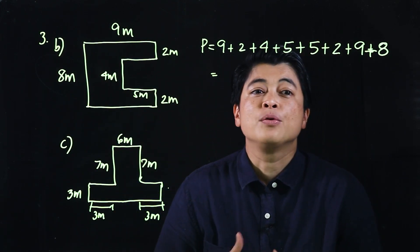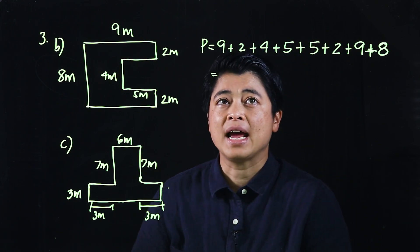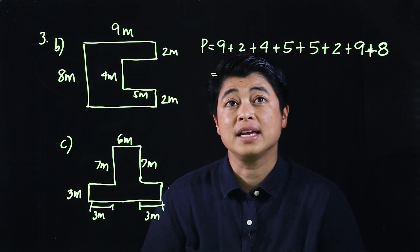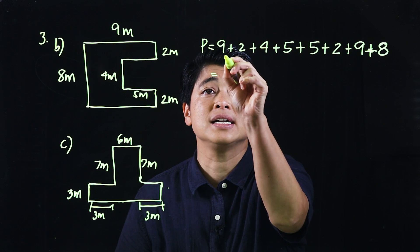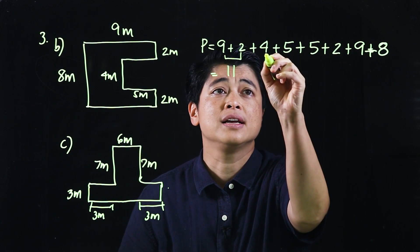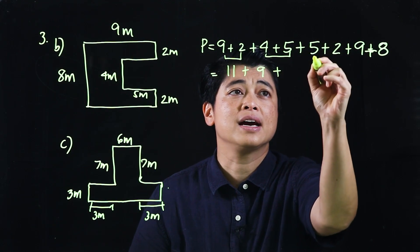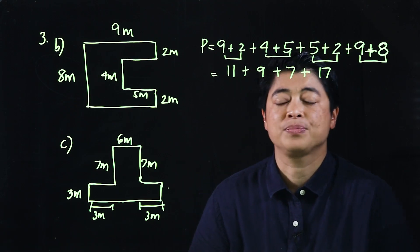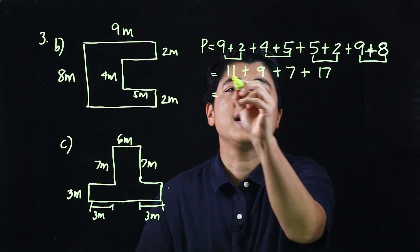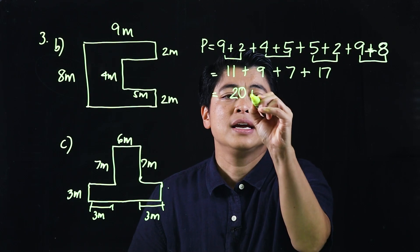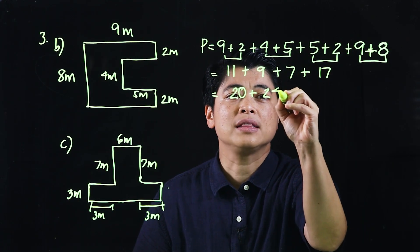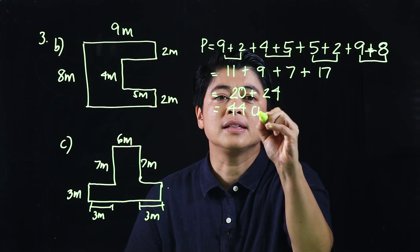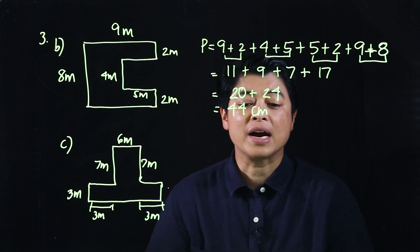We can add the sides one by one or in groups, whatever is most convenient. If I group: this pair is 11, that pair is 9, that pair is 7, that pair is 7, and that pair is 17. Adding those groups: 20 plus 24 makes the perimeter 44 centimeters.